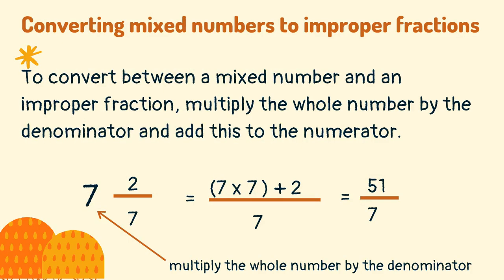To convert between a mixed number and an improper fraction, multiply the whole number by the denominator and add this to the numerator.